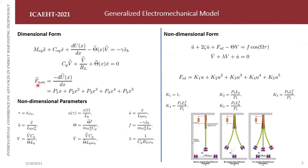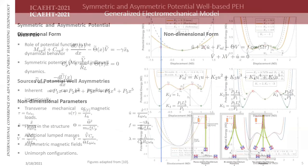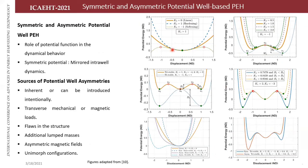The non-linear restoring force is represented using a fifth-order polynomial. Up to three stable positions can be modeled using non-dimensional parameters. Converting to non-dimensional form, the non-dimensional stiffness coefficients k1 through k5 are defined. Using this model, a linear potential and non-linear potentials of hardening and softening types can be represented.